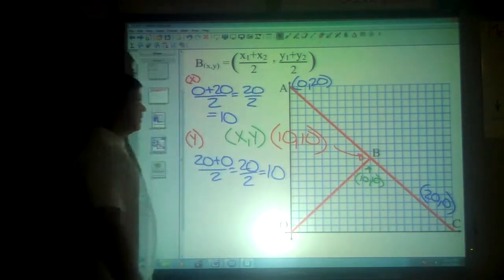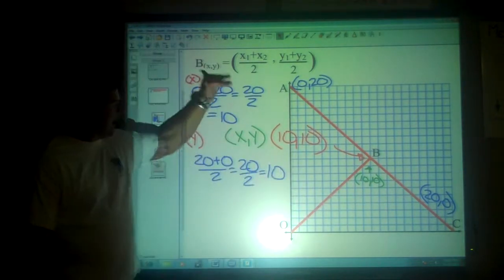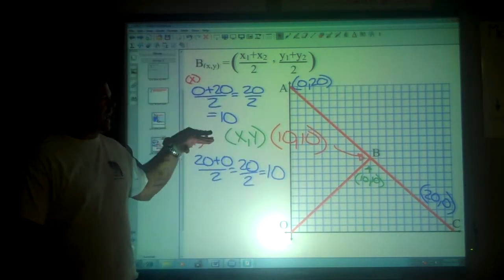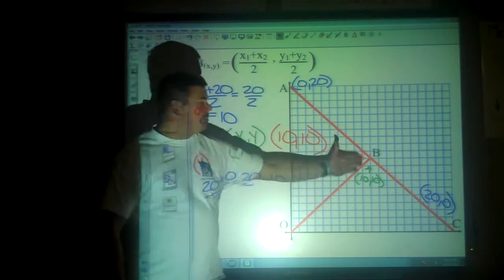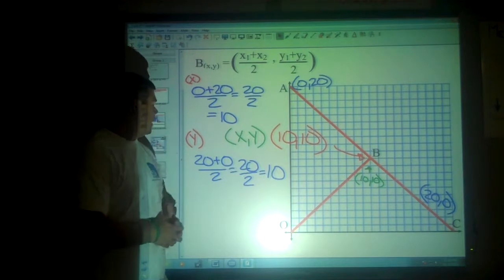And then, perfect, which means it works. You won't always have perfect, easy numbers, but the algorithm, the way you set it up, is exactly the same. If you want to find the midpoint between two coordinates, just find the average of the x's and the average of the y's.